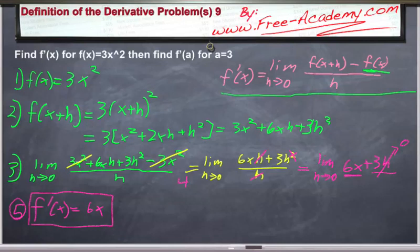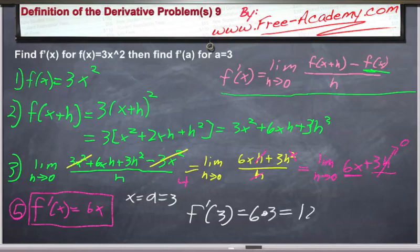Now the next part of the problem is asking us to evaluate this at a = 3 and x = a. So basically find f'(3), which is just a matter of putting 3 everywhere we have x in the equation, and we get 18.